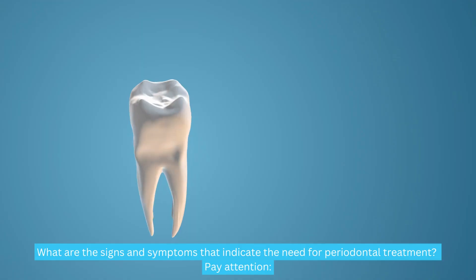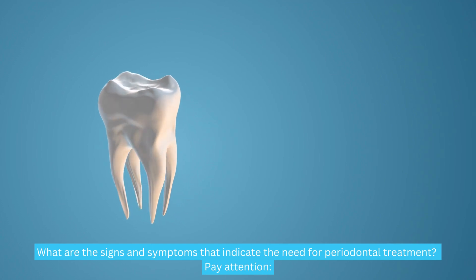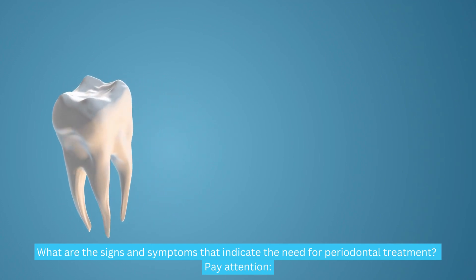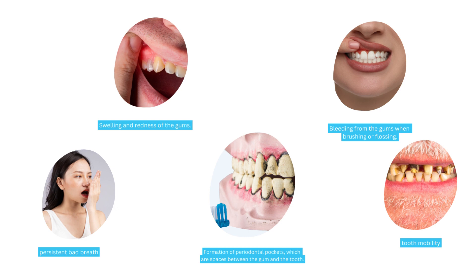What are the signs and symptoms that indicate the need for periodontal treatment? Pay attention! Swelling and redness of the gums. Bleeding from the gums when brushing or flossing. Tooth mobility. Persistent bad breath. Loss of teeth. Formation of periodontal pockets, which are spaces between the gum and the tooth.